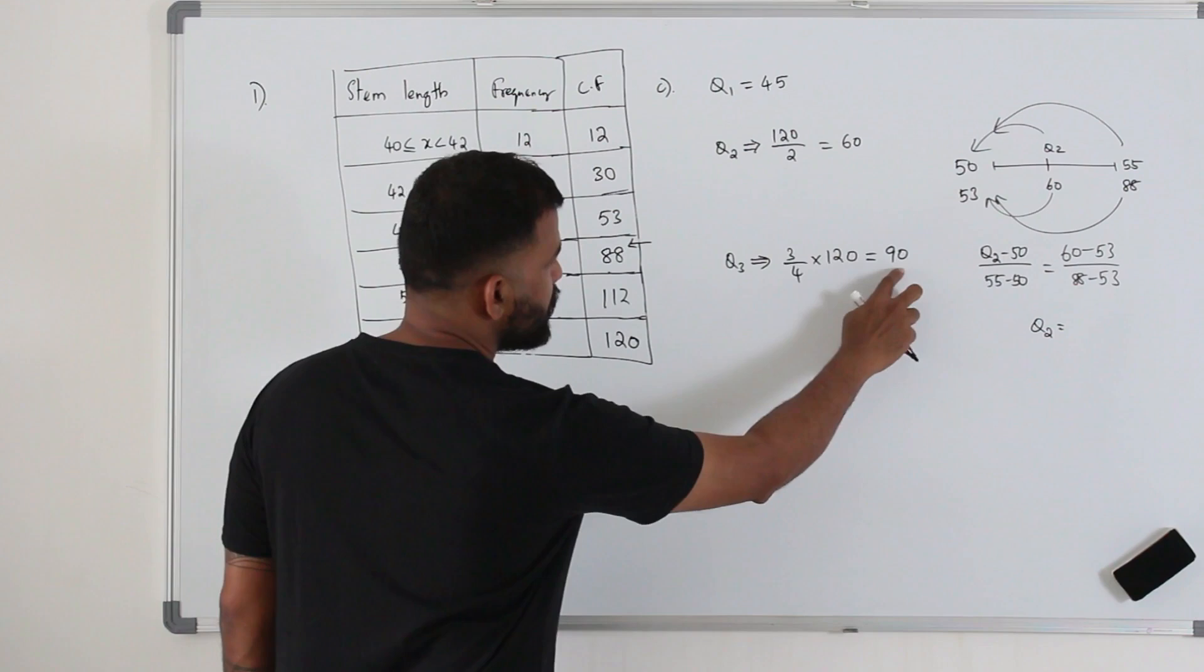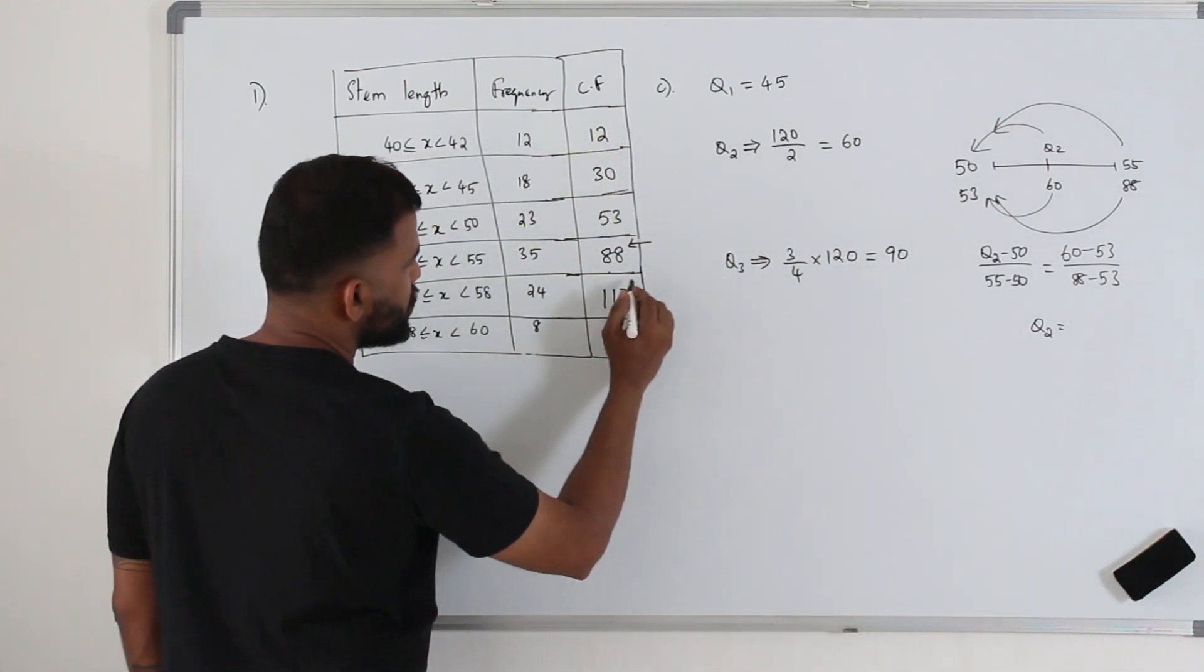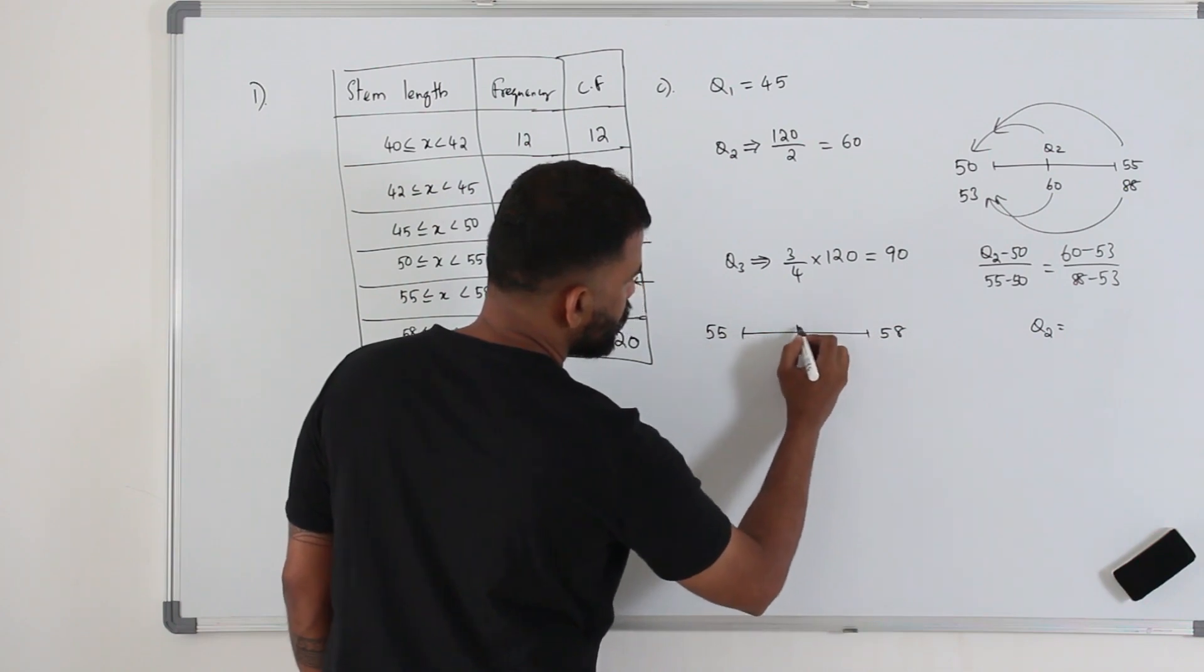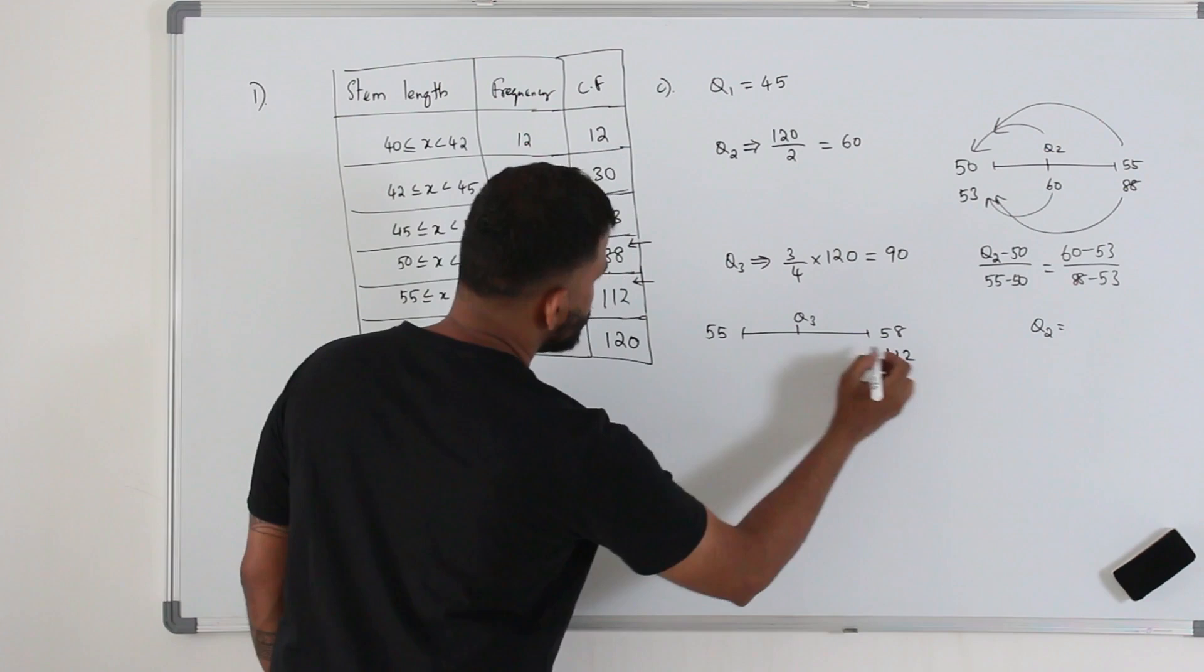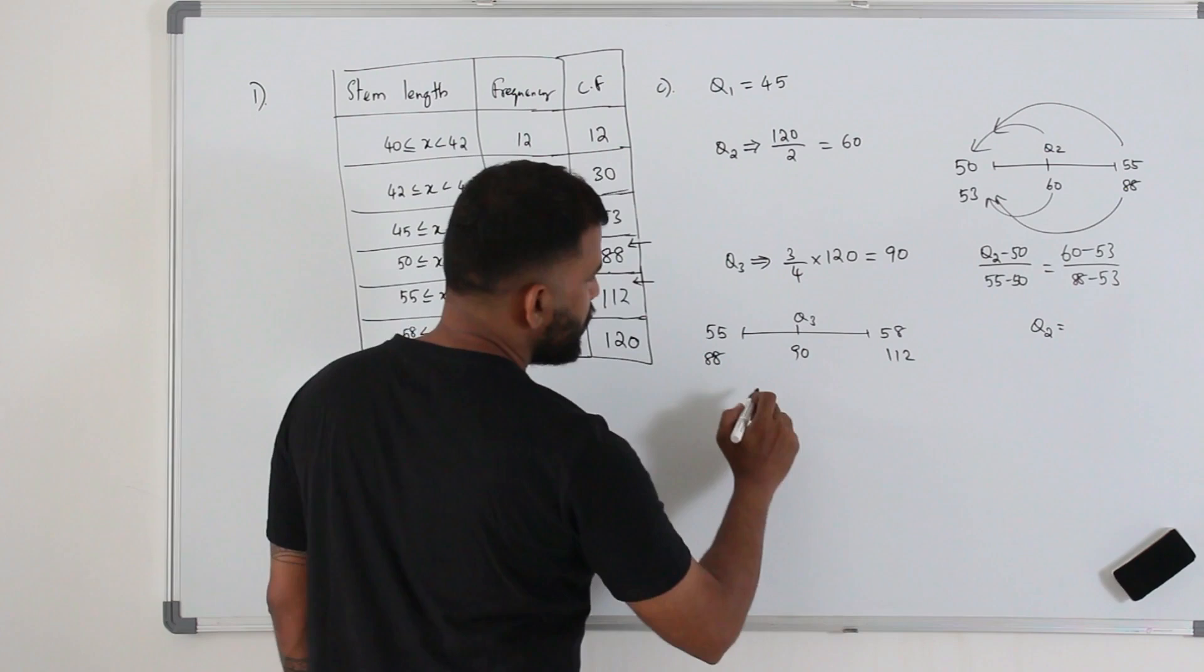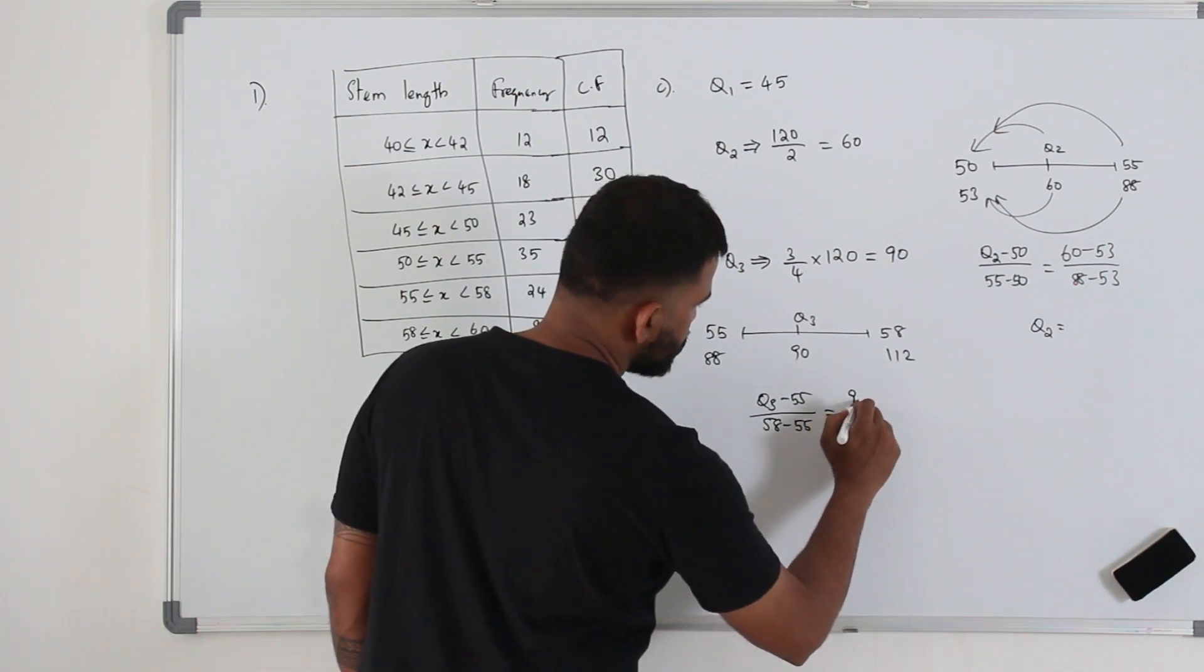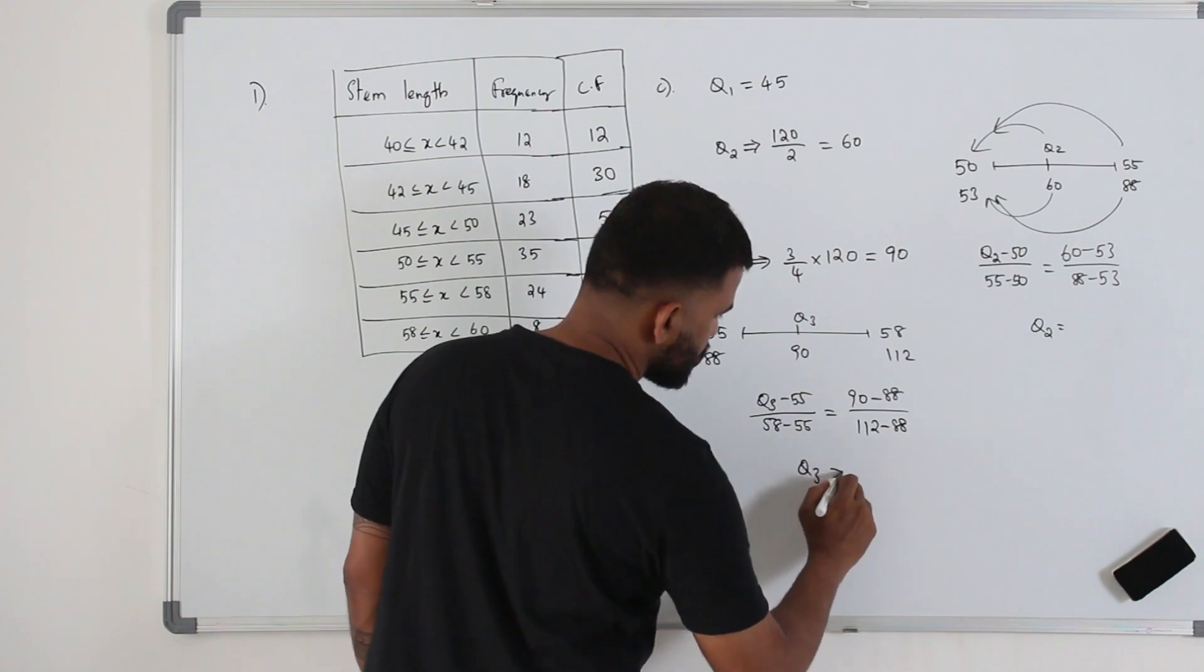And here, 90. Where does the 90 lie here? More than 88 till 112 is in here. So 90 is in here. So take the corresponding class interval, 55 to 58. Your Q3 is in between here. Corresponding cumulative frequency and the previous cumulative frequency, your 90 is in between. Apply the interpolation. Q3 minus 55 over 58 minus 55 equals 90 minus 88 over 112 minus 88. Make Q3 as a subject.